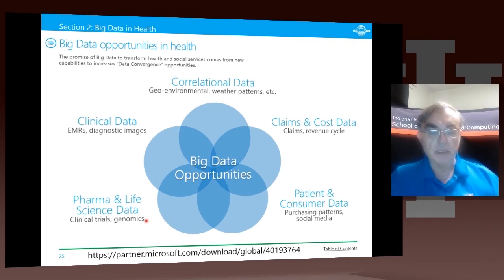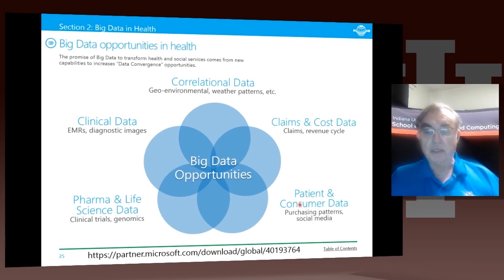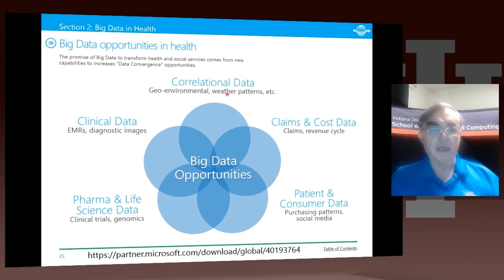We also have data from clinical trials of particular drugs, data from insurance companies, and customized non-medical patient data about what they do, how they do it, and what they buy. Finally, we have contextual data, such as whether patients live in humid areas with lots of mosquitoes or what have you. These are all data samples that can be correlated together in some giant machine learning package.